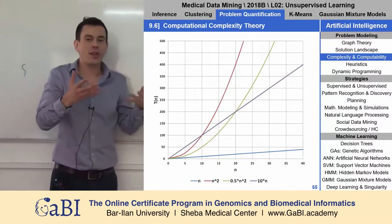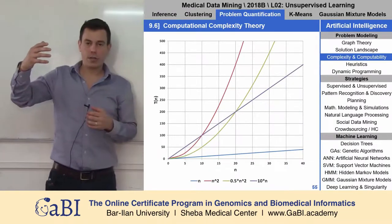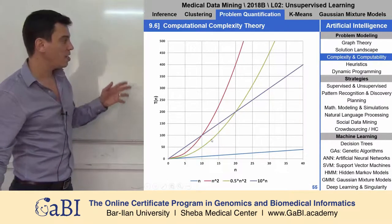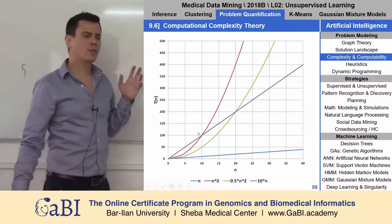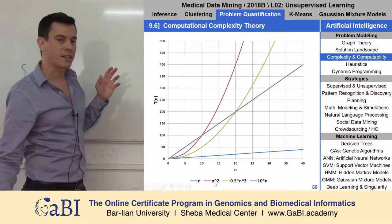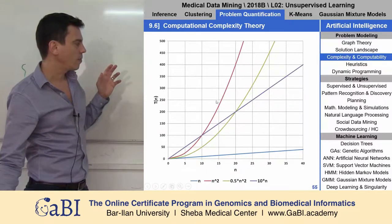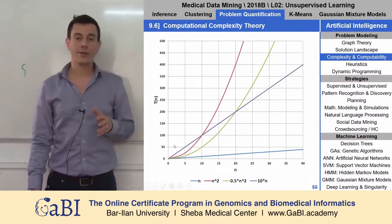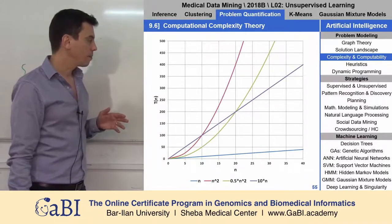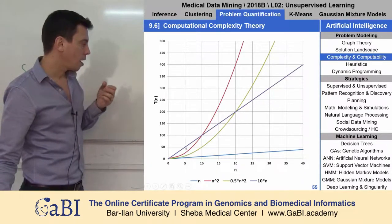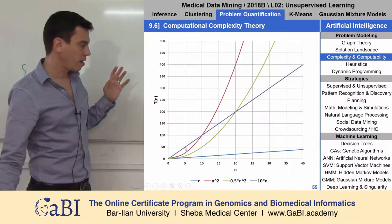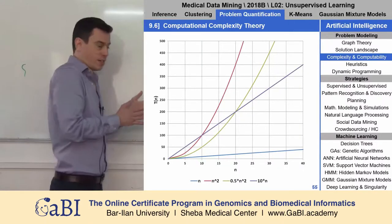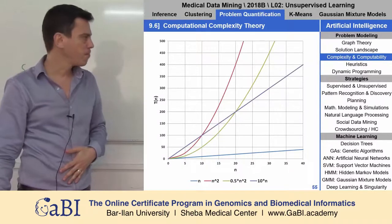What happens if we have something with a power? The intra-cluster distances calculation, we saw that it is n squared. Let's look at two algorithms: the red one, which is n squared, and the purple one, which is 10n. Which one is slower? The n squared goes up very, very fast. Here you see that the purple 10n is slower up to 10 patients, but after that n squared becomes much slower.